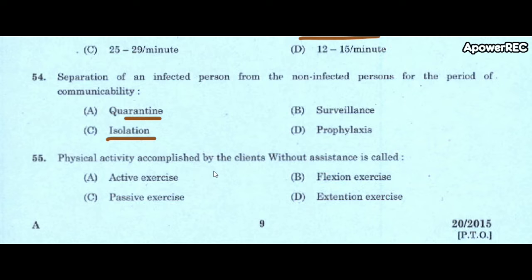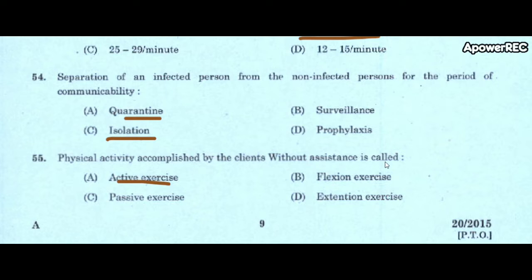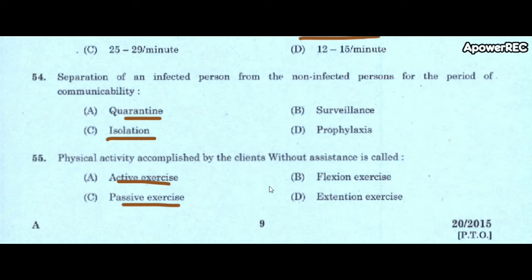Next question: physical activity accomplished by the client without assistance is called A) active exercise, B) flexion exercise, C) passive exercise, D) extension exercise. Correct answer is active exercise. Physical activity accomplished by the client without assistance is called active exercise. Passive exercise is exercise done with the help of others.